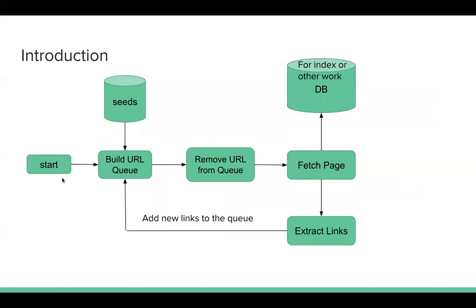This is the basic architecture. We start with some seed URLs. First, we build the URL queue — we read those seed URLs, which can be anywhere from 10 to 1 million. Each time we remove one URL from the queue, we send an HTTP request to fetch the content of that URL. After fetching the content, we analyze it and store it in our database, for example for indexing purposes. From this content, we extract hyperlinks and add those new hyperlinks to the message queue.